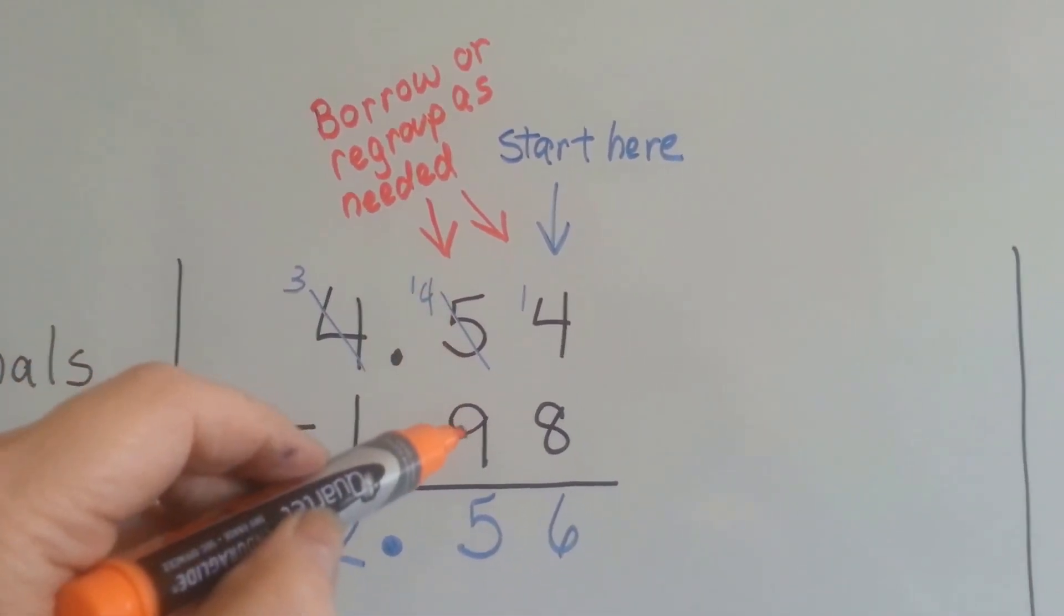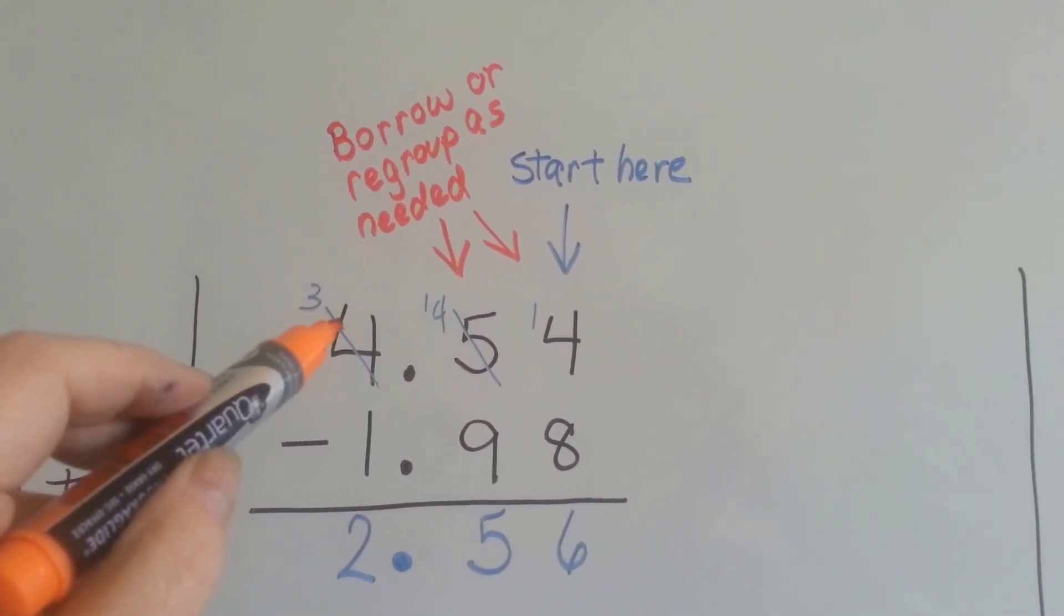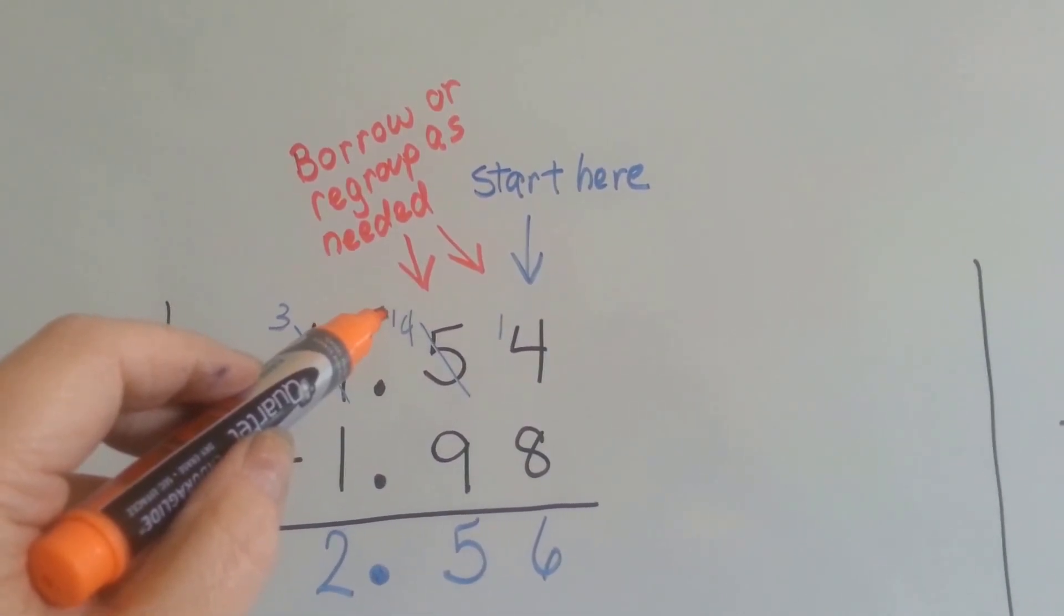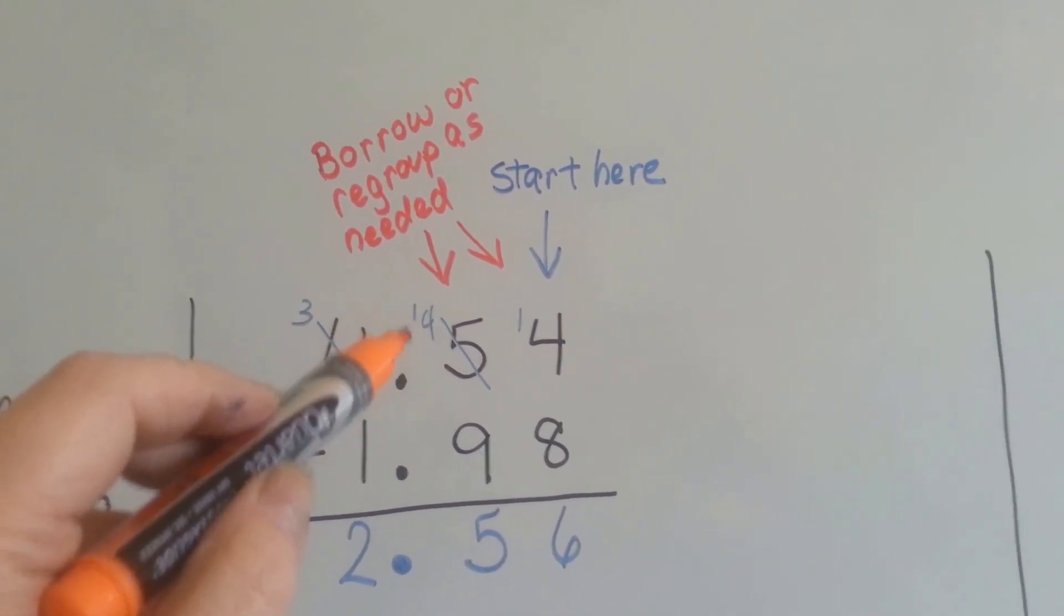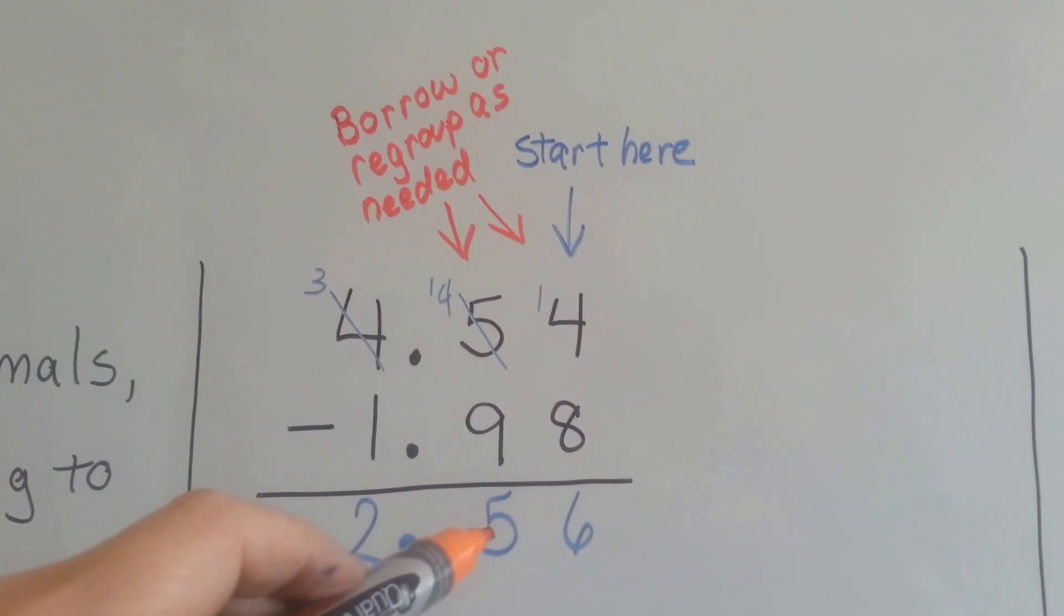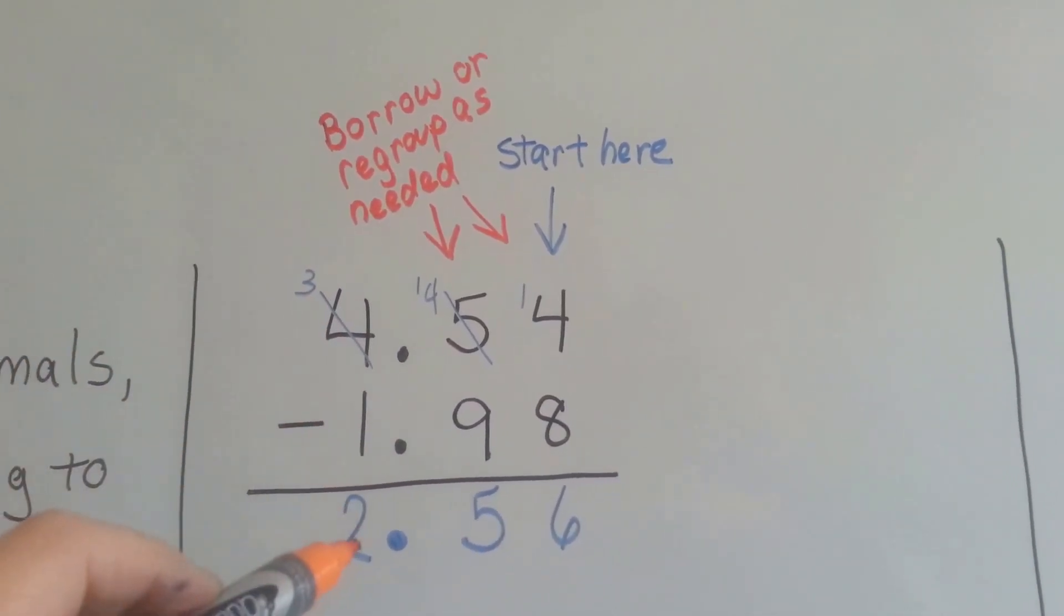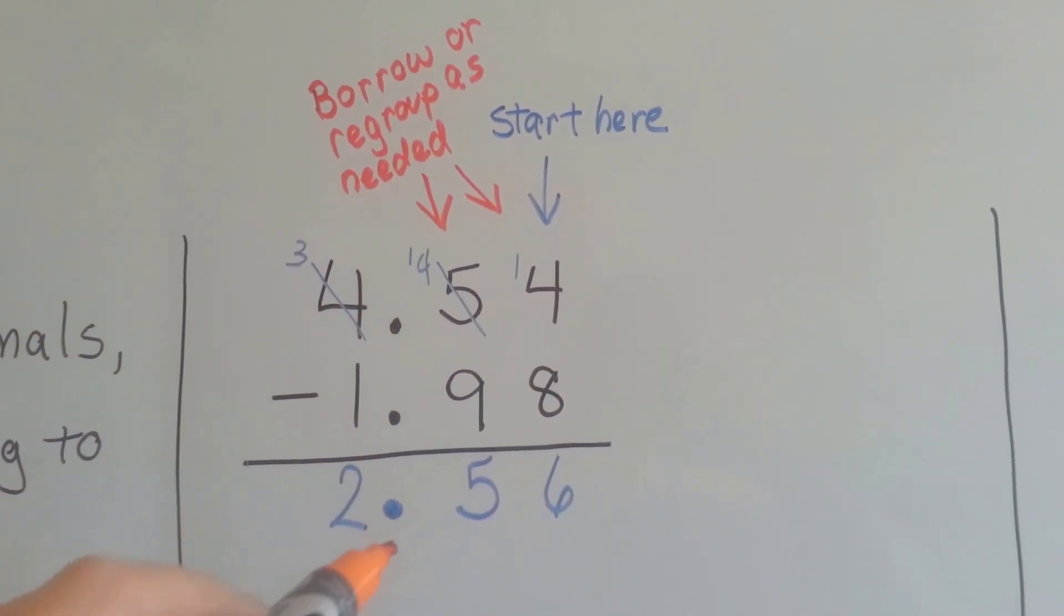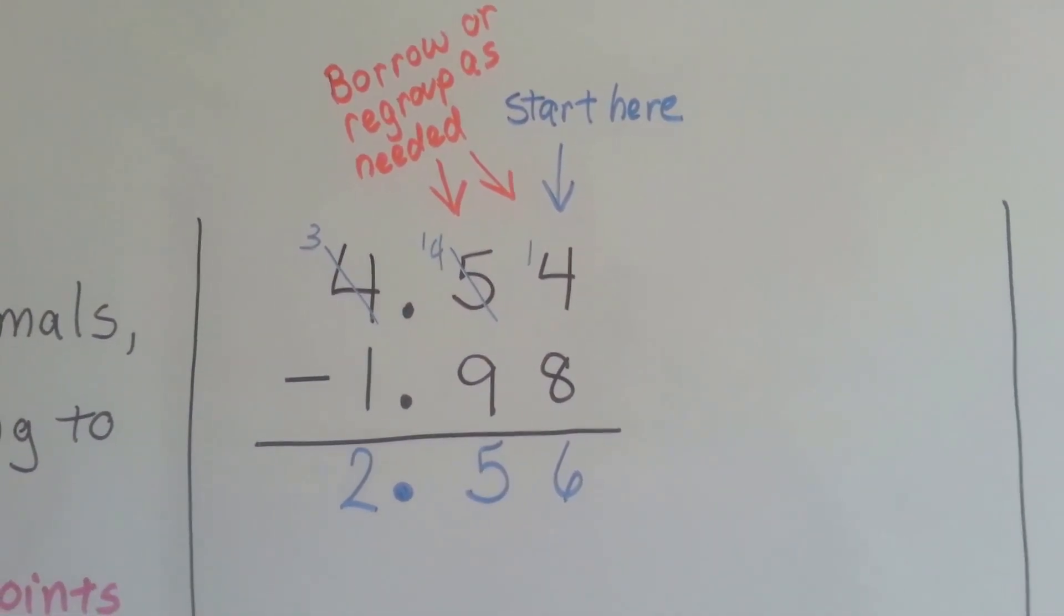4 take away 9, we can't do it, so we borrowed from the whole number. It became a 3. We gave a 1 to the tenths place, to the 4. And now we have 14 take away 9, which is 5, and 3 take away 1, which is 2. We keep our decimals nice and pretty and perfect, and our answer is 2 and 56 hundredths.